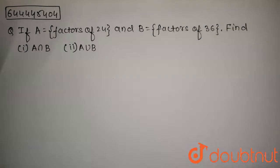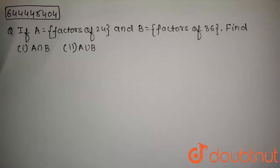The question is: if A equals the factors of 24 and B equals the factors of 36, then find A intersection B and A union B.